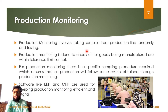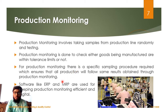The second objective of textile testing is production monitoring. During production monitoring, samples are collected randomly from the whole production floor and their testing is carried out. The samples are collected in a specific manner so that the testing results of the collected samples will represent the quality of the whole production floor. In industry, some software like ERP and MRP are used for keeping production monitoring digital and efficient.